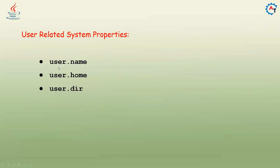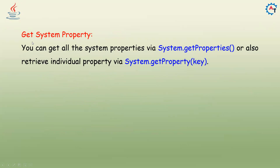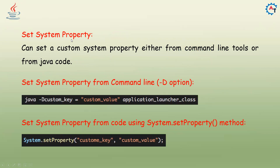User related system properties include: user.name, user.home, user.directory. You can also set a custom system property either from command line tools or from Java code. From the command prompt: java -D customKey=customValue ApplicationLauncherClass. Or you can set it directly in your code using System.setProperty(), for example System.setProperty("customKey", "customValue"). We will see this with an example.